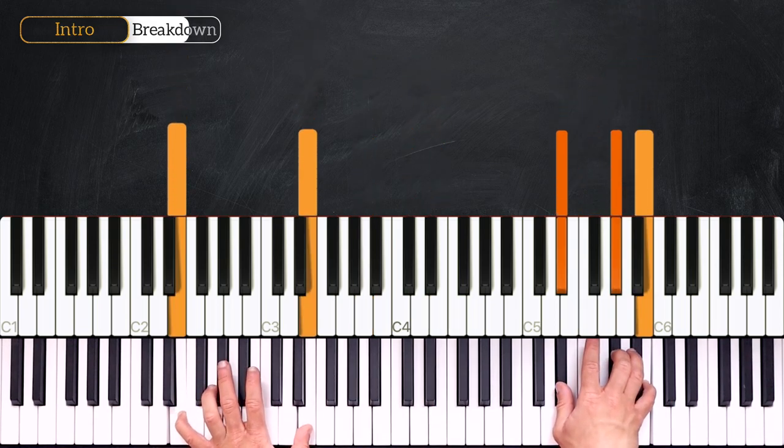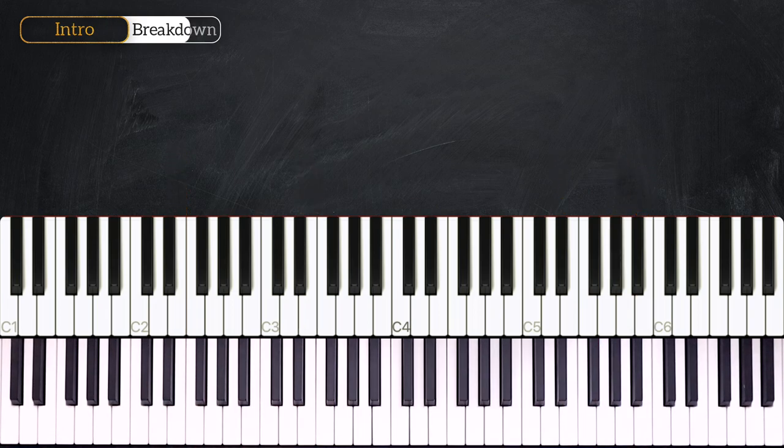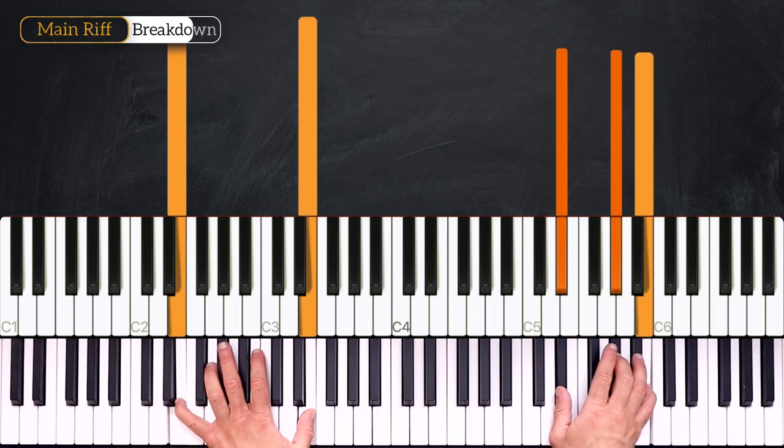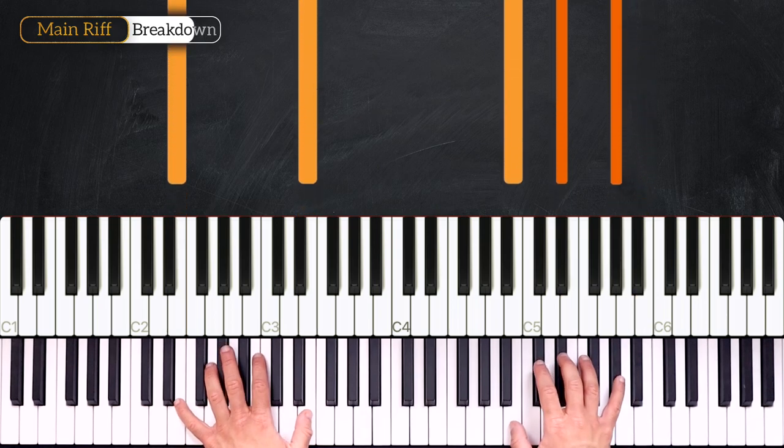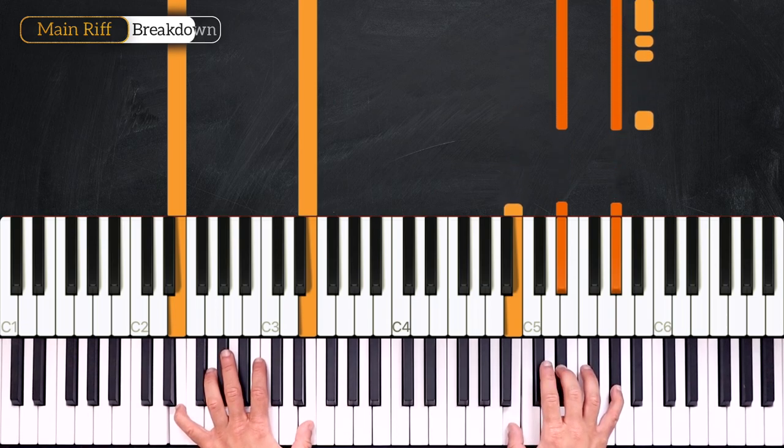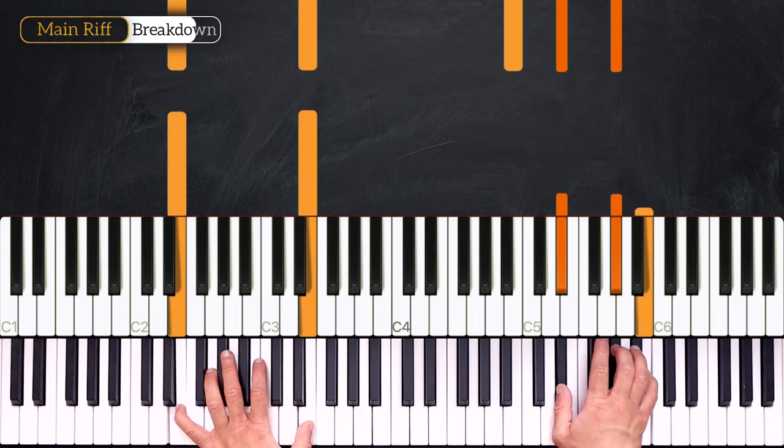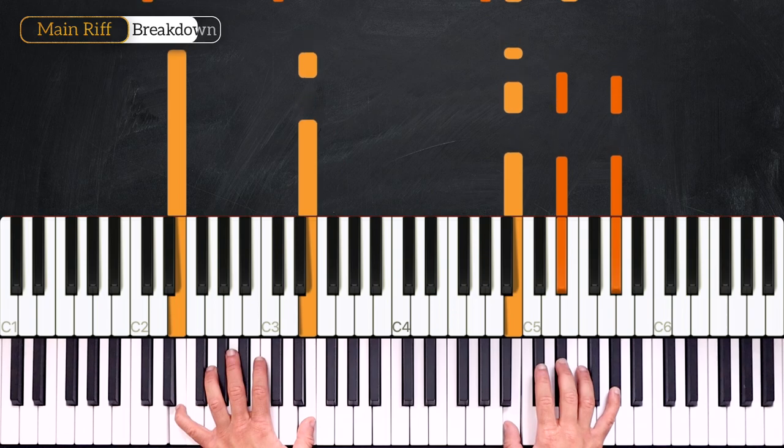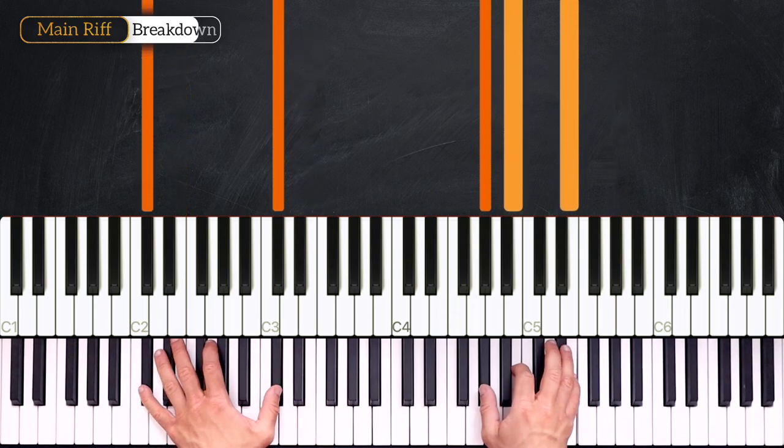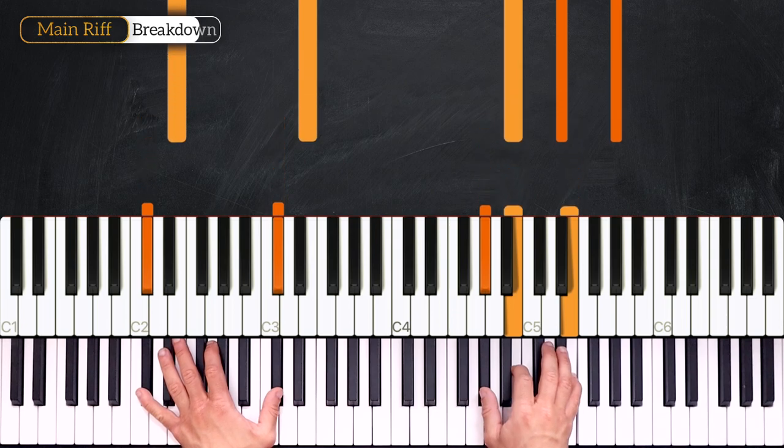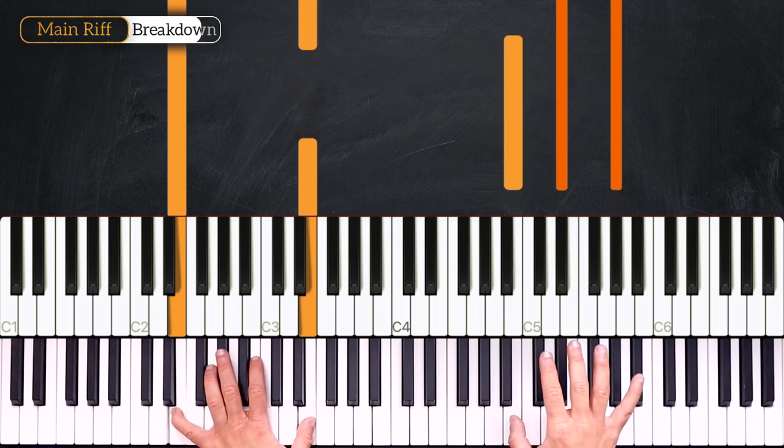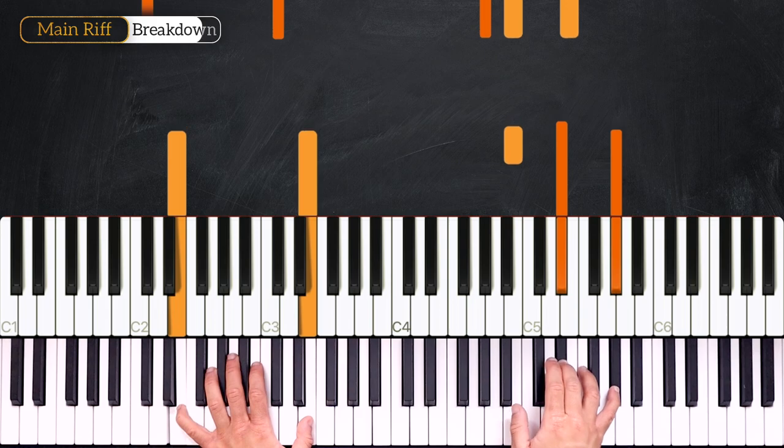And then from here we'll go into the main riff. Okay, so now let's learn the main riff. It goes like this. We start on E major 7, then we'll play on the right hand this inversion. So we take the B down one octave and we'll repeat the left hand. Then we'll play this rhythm into the C sharp minor 7.